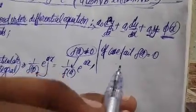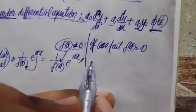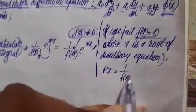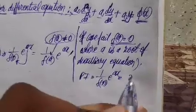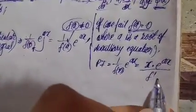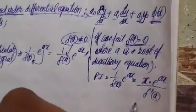If f(a) = 0 — meaning a is a root of the auxiliary equation — then this case fails. In that situation, the PI becomes PI = [1/f(D)] · e^(ax), which gives x · e^(ax) / f'(a). You multiply by x and take the derivative of the function once, then substitute D = a.